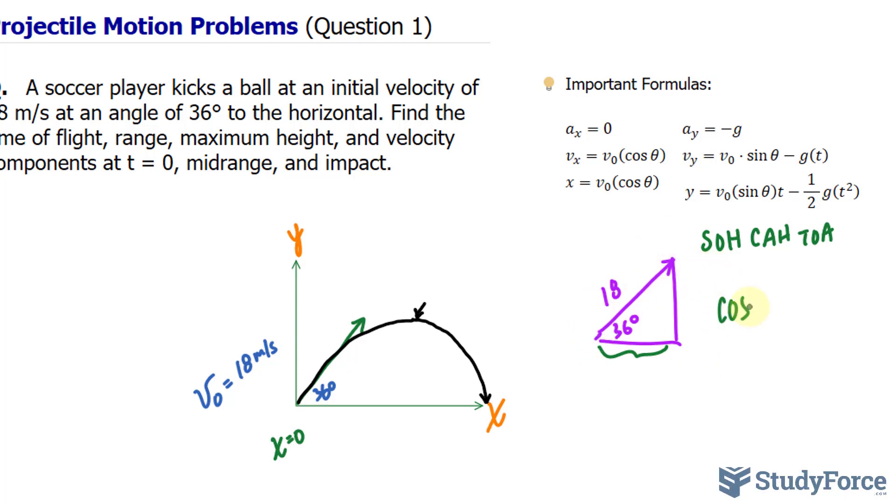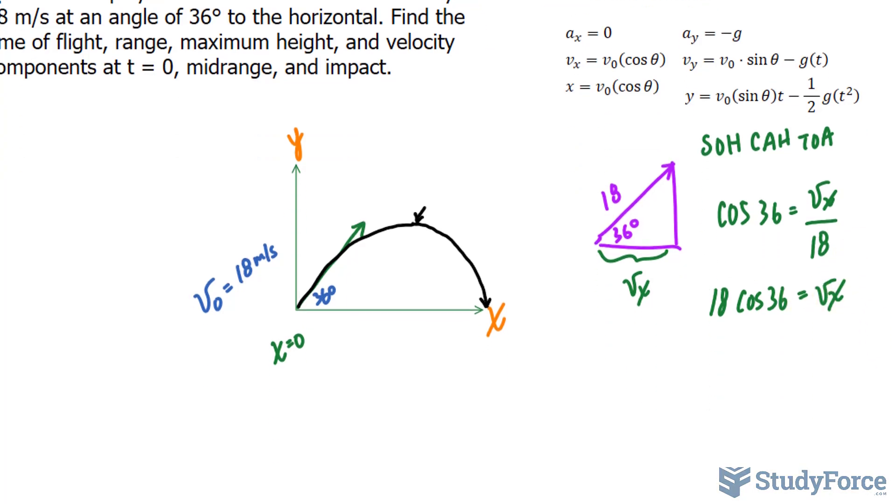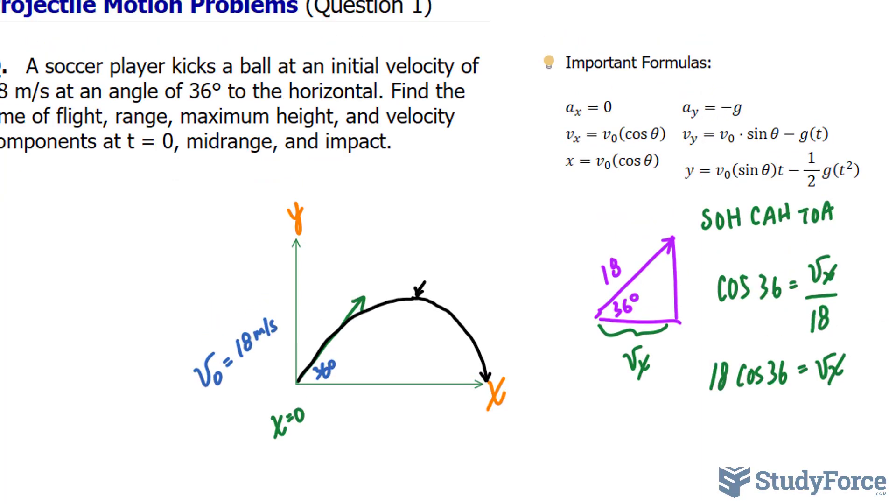So I can use cosine at an angle of 36 is equal to the adjacent, which is what we're looking for, and I'll denote the adjacent as vₓ over the hypotenuse of 18. If I rearrange this, I end up with 18 cos(36) = vₓ. So that's the x component, and that will come in handy for when we use these formulas. Notice that that formula is summarized right there.